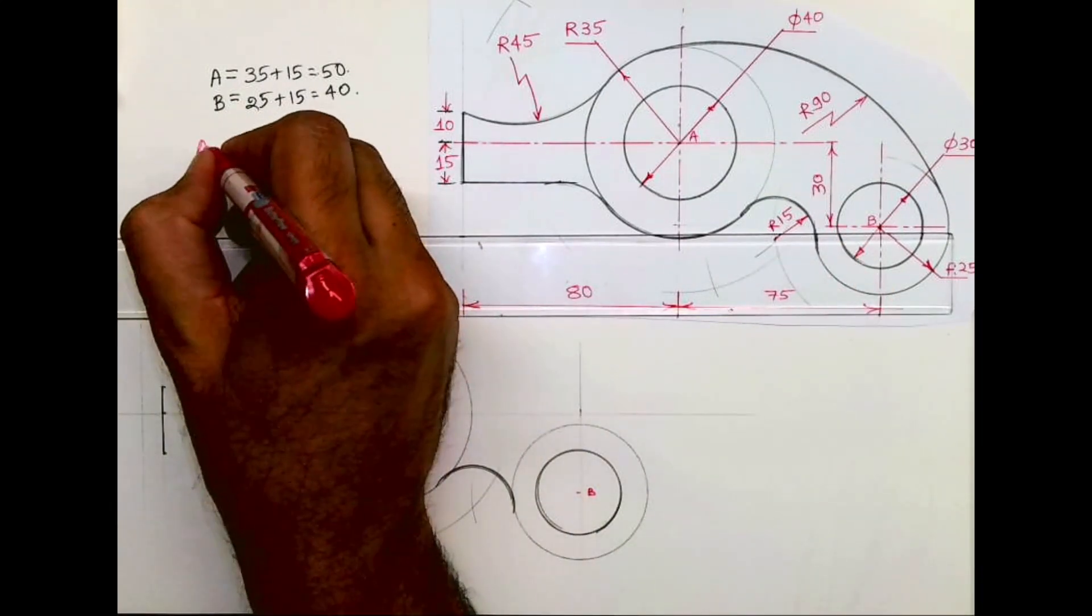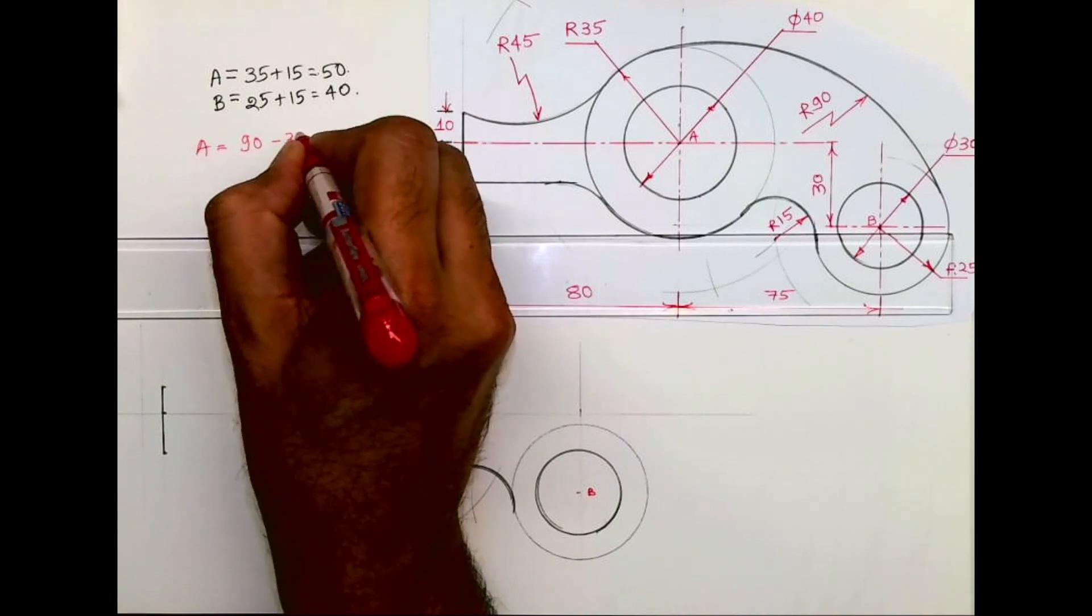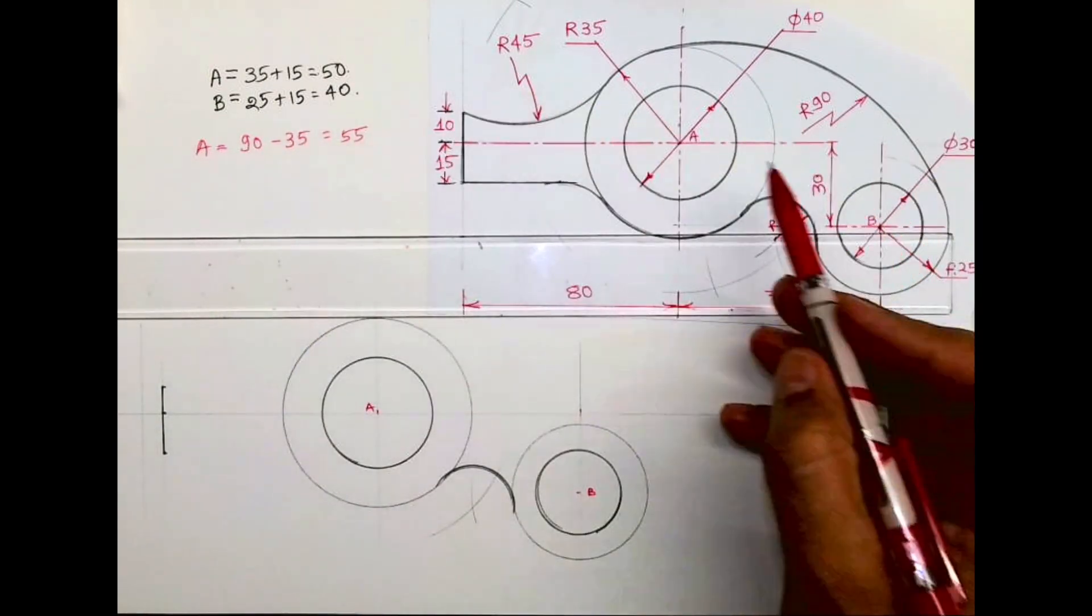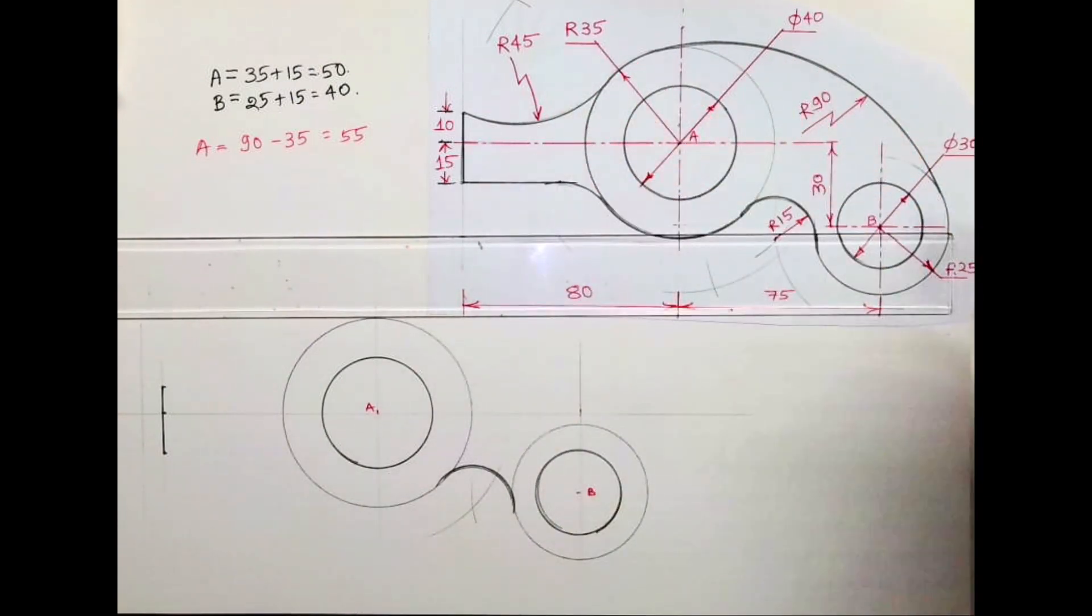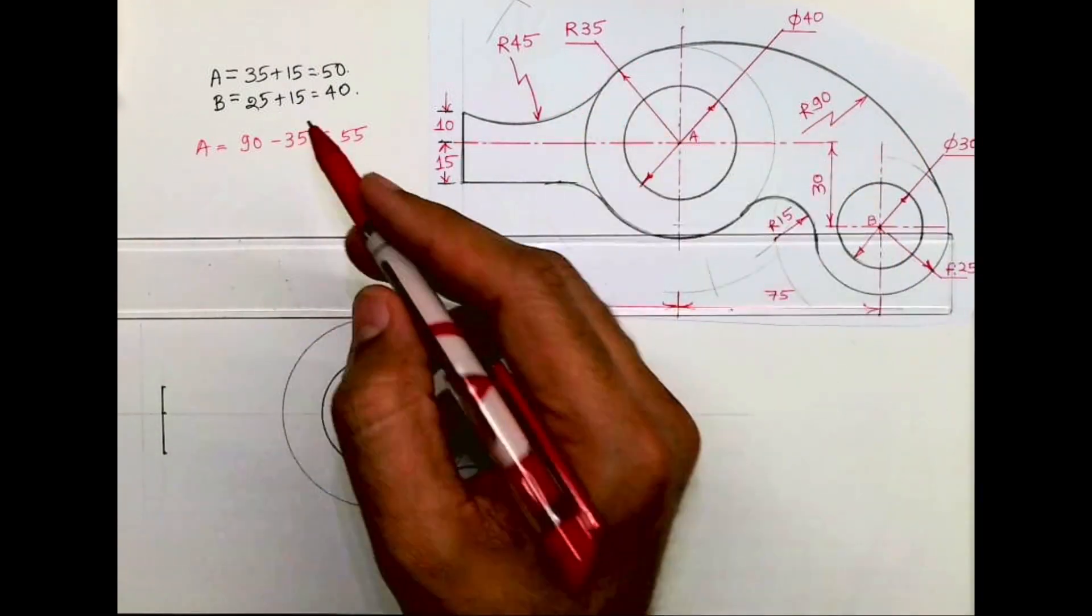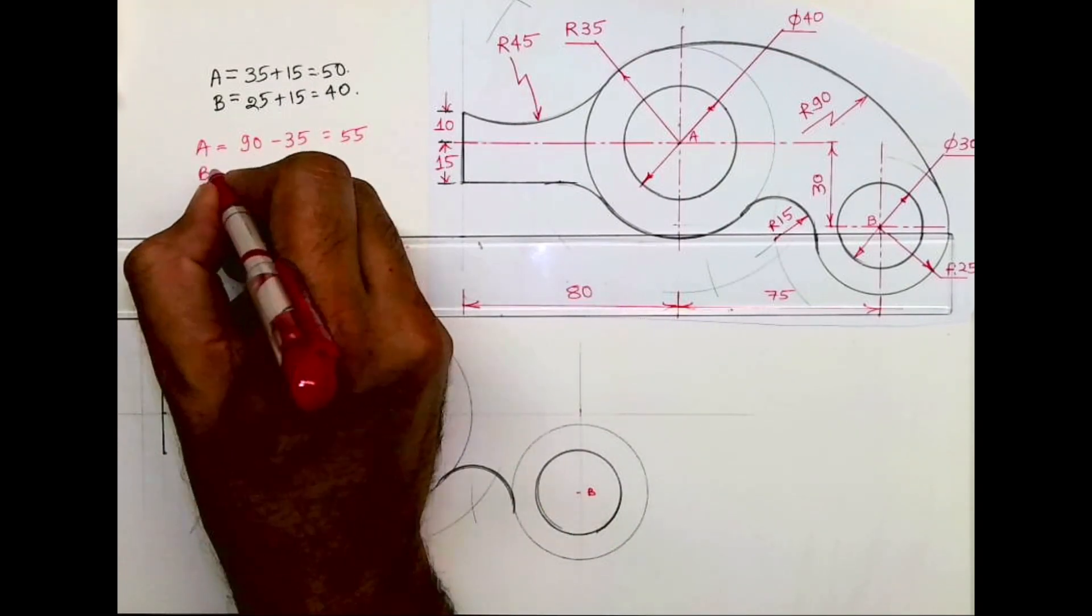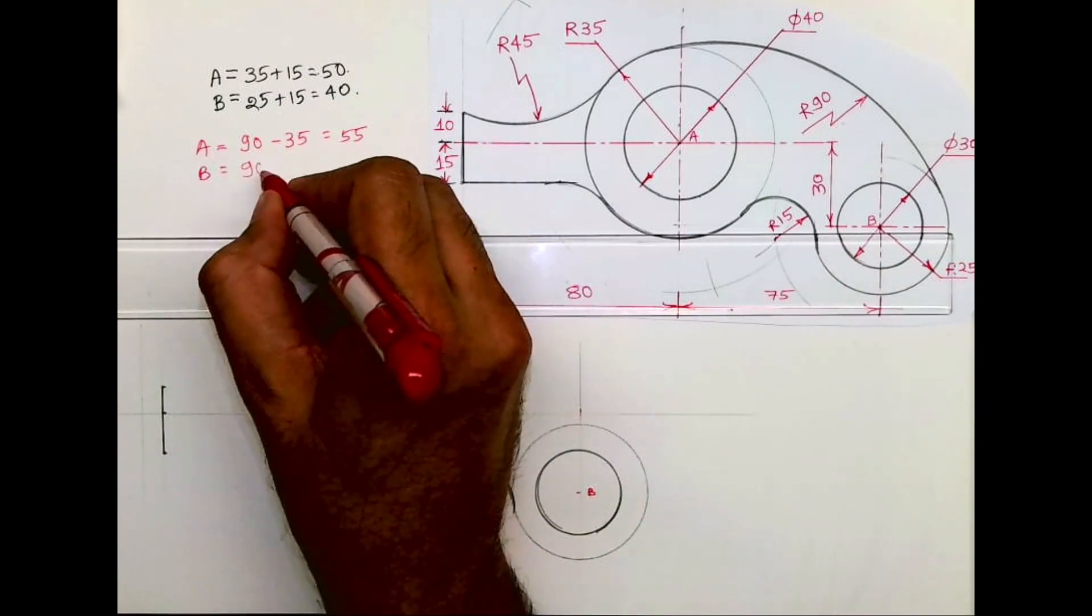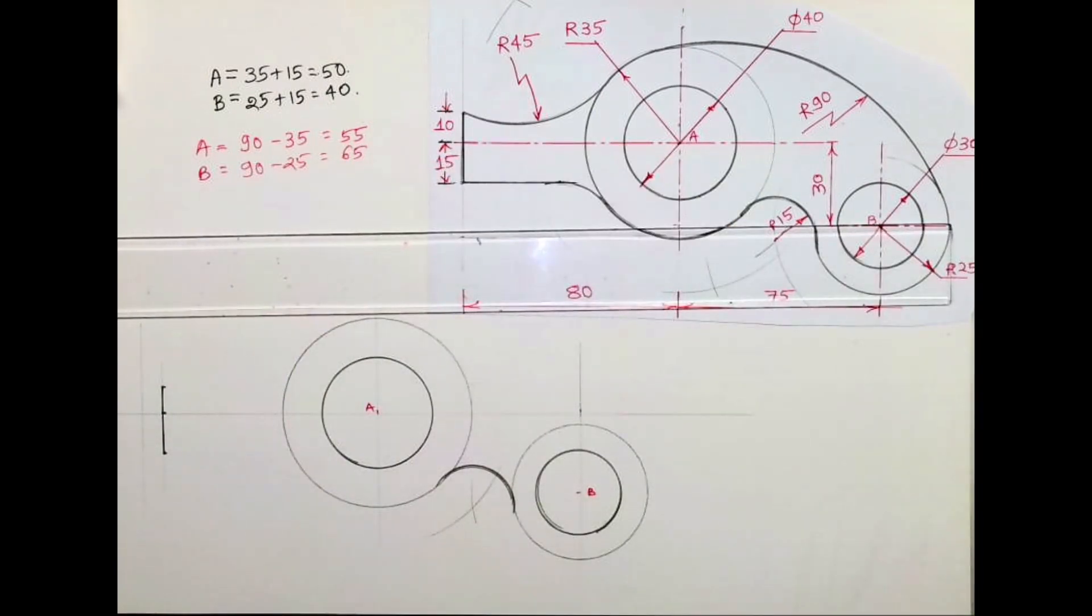Now for radius 90, which is internal. It's a big circle. From A you cut 90 minus 35, which is 55. Radius 35 is inside as well as radius 25. So 90 minus 25 is 65. From A you cut 55 and from B you cut 65.